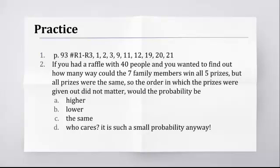I added this question just really to make you think about it, and this is coming up in the next unit. If you had a raffle with 40 people and you wanted to find out how many ways could the seven family members win all five prizes, but the prizes were the same, so the order in which the prizes were given out did not matter, would the probability be higher, lower, the same, or who cares? It's so small. Why do we even care about this?